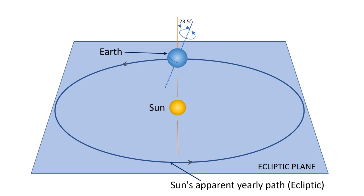The imaginary plane containing the Earth's orbit around the Sun is called the ecliptic plane. This is shown with a light blue rectangle on the screen. The Sun's apparent path through the sky lies in this plane and is called the ecliptic, as pointed out in the diagram.